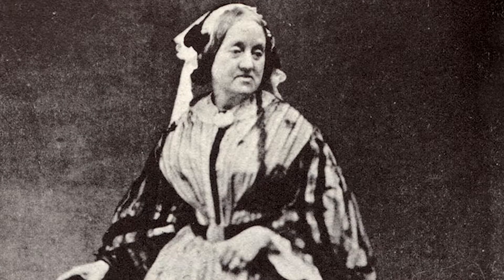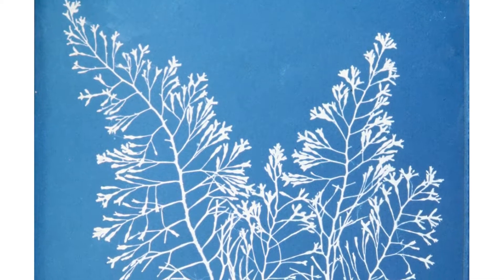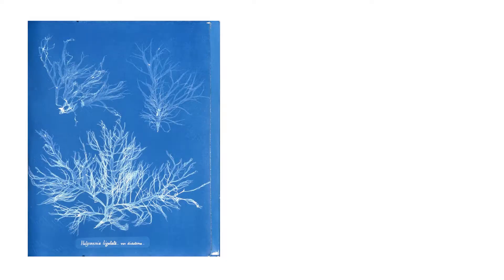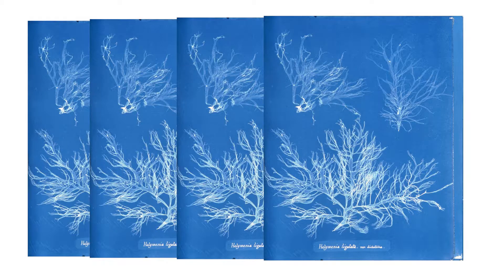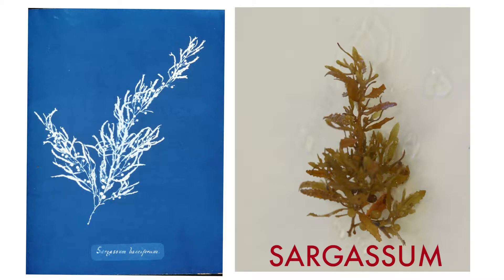Artists can choose from many objects to make cyanotype prints. Objects from nature are often a popular choice. Remember botanist Anna Atkins? She realized that cyanotypes could be used as a scientific tool to capture detailed images of living things that couldn't necessarily be captured in drawings. The images could be copied repeatedly and shared with others for scientific discussion. Let's look at Atkins' cyanotype print of a brown algae from the genus Sargassum, along with a similar live specimen.